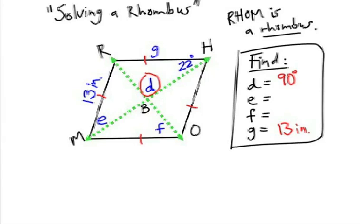To find angles E and F, we need to remember that inside the diagonals of a rhombus, they create right triangles. Notice that this triangle here, RBH,